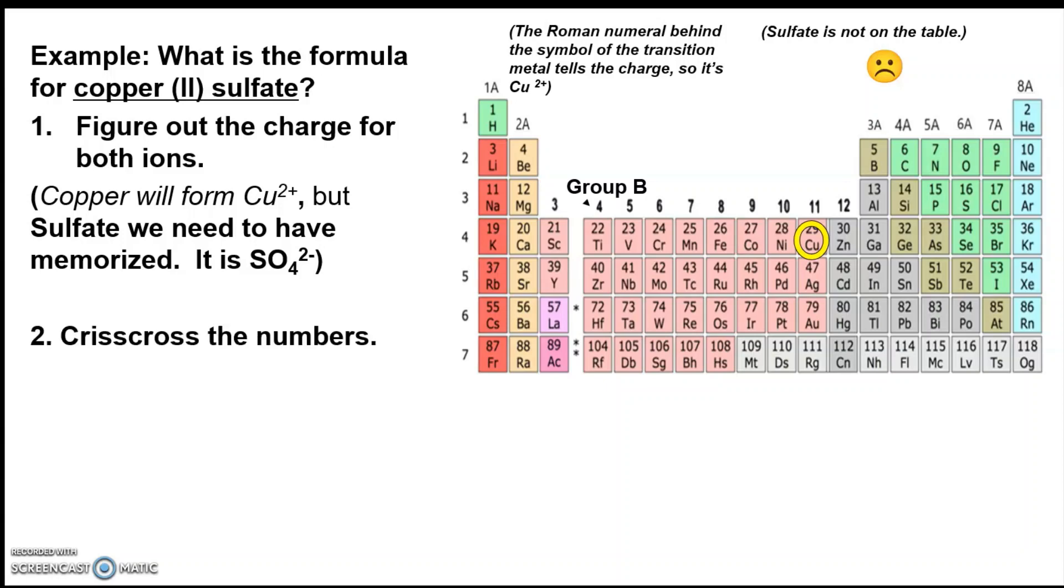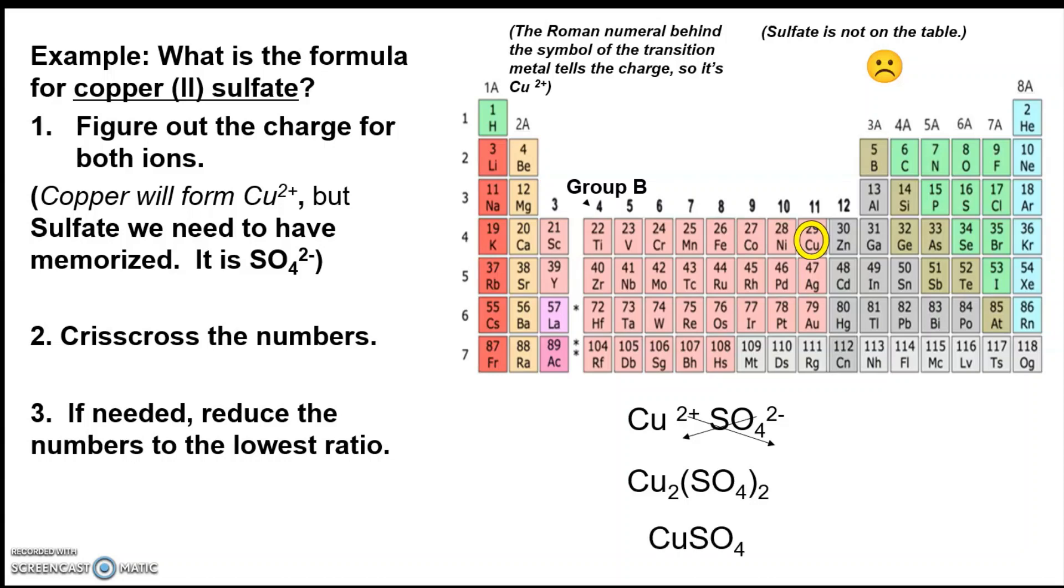So we're on to the step where we do the crisscross. We come over here. We put the charges up. This number goes there. That number goes there. And we end up with Cu2(SO4)2. And hopefully it is immediately recognized that that is, in fact, is not the lowest ratio. So this copper and sulfate will bind in a one-to-one ratio. That's just how it's naturally found. So we reduce it down. And then we have our answer.